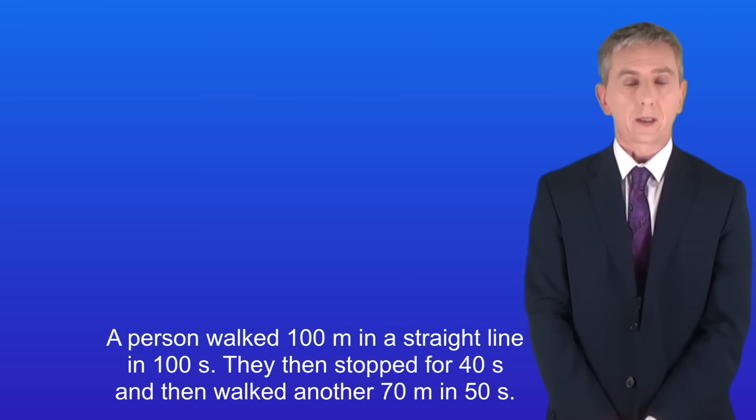This shows a description of a journey. A person walked 100 meters in a straight line in 100 seconds. They then stopped for 40 seconds and then walked another 70 meters in 50 seconds. So we're going to represent this journey on a distance-time graph.